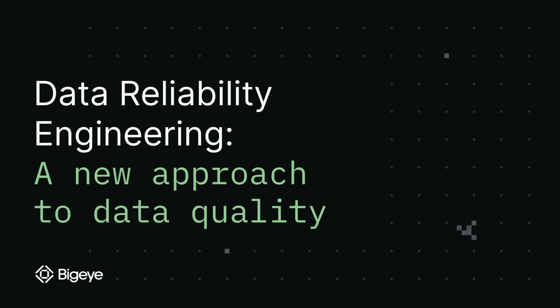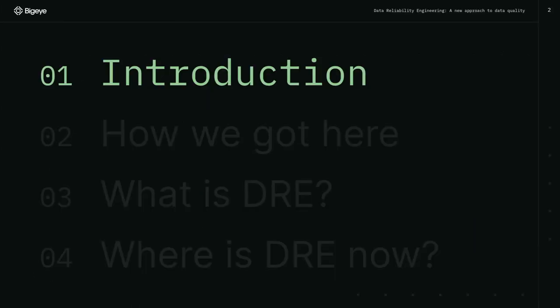I hope you're all here to listen about data quality. If not, you're going to sit through this for 40 minutes. The doors have been locked from the outside — just kidding, they're still open. We're going to go through a quick introduction, talk about how we got here from the data landscape, what data reliability engineering is and where it is now, and maybe a couple of tips on how you can get started.